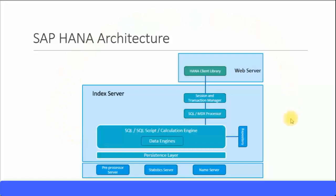This is a diagram of the SAP HANA architecture. The main important database server runs in the index server, which consists of many different sub-servers and data engines — you can see the session and transaction manager, the processors, the persistence layer, the data engines, and so on. This can all be accessed using the web server via the HANA client library. The extended applications engine, called the access engine, resides between the web server and the index server. The other three servers — the preprocessor server, the statistics server, and the name server — all sit at the bottom layer.